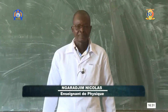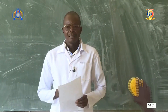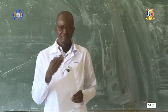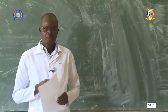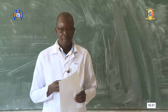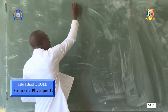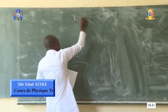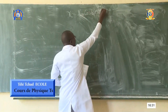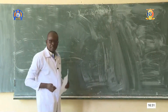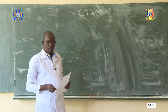Merci beaucoup. La première question posée est de savoir comment j'ai fait pour diviser la période par 4. J'avais dit que pour représenter la courbe de l'oscillateur mécanique, elle est de la forme x = xm·cos(ω₀t + φ). J'avais pris le cas où la phase φ = 0 pour représenter.